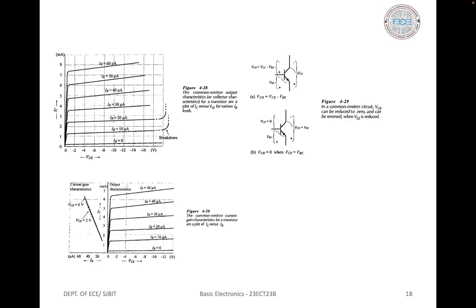The early effect can be demonstrated by extending the characteristics to the left of the current axis, where they meet at a point on the horizontal scale. The voltage at this intersection is typically around −100 V to −200 V, known as the early voltage VA. The slope of the collector characteristics for a given IC level can be calculated as RC = VA / IC. The quantity RC represents the AC output resistance of the BJT at the collector terminal, and some computer programs use the early voltage to determine RC for a given collector current.